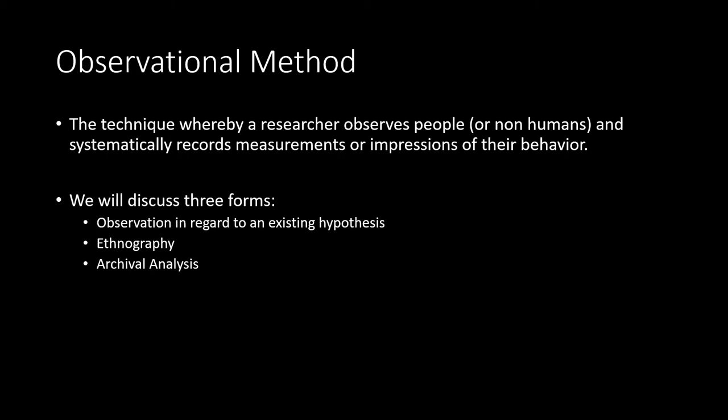Starting with the observational method. This is a technique whereby a researcher observes people, or non-humans for that matter, and systematically records measurements or impressions about their behavior. We will discuss three forms of this method: first, observations in regard to some existing hypothesis, followed by ethnographies and archival analysis.